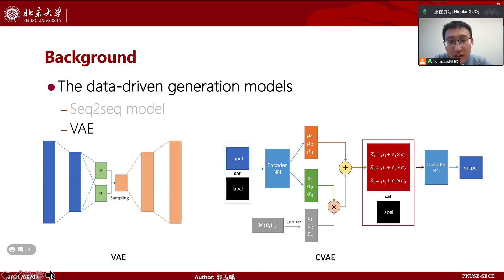Because the task is creating different layouts, the generative model is also a key part. In this work, we use conditional variational autoencoders as generative models. We call it CVAE.